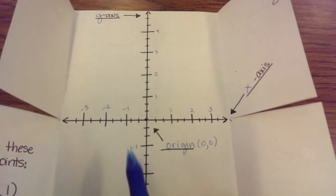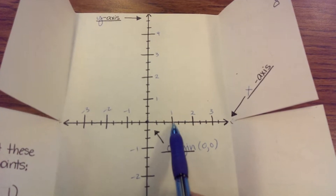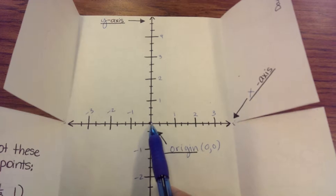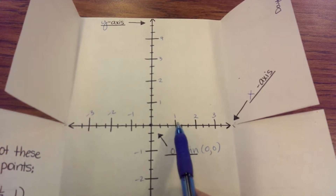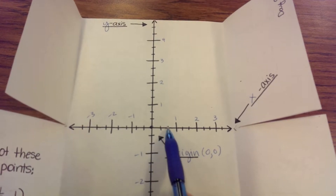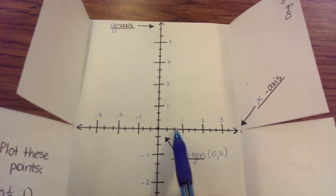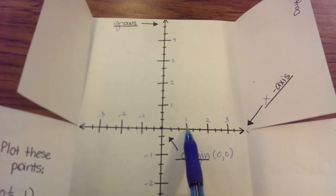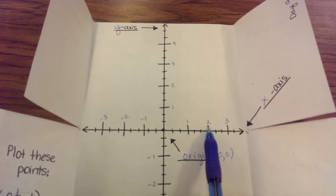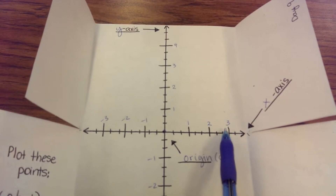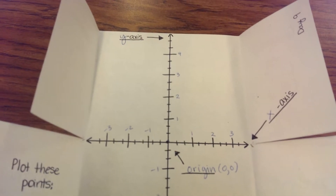Now if you look at this coordinate plane, each tick mark is not one. The one is way over here — to get to the one you need to go one, two, three spaces. So these are in thirds, because it takes three hops to get to one whole. So this is one-third, two-thirds, and then three out of three — one whole. Then one and one-third, one and two-thirds, two wholes, two and one-third, two and two-thirds, three wholes. These are going in thirds.